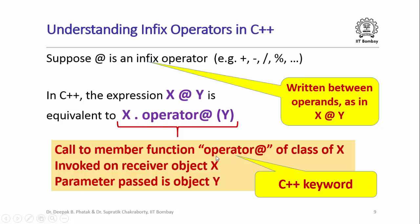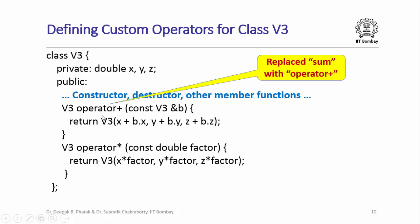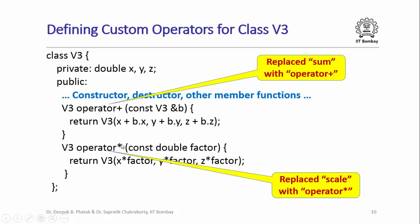Going back to the class V3, here is how we implement the member functions operator+ and operator*. operator+ takes another object B of class V3 as a parameter and returns a V3 object whose X, Y, and Z coordinates are the sums of the corresponding coordinates of the receiver object and B. Similarly for the scaling operation. This code is essentially the same as what we wrote earlier for sum and scale, but renamed operator+ and operator* respectively.